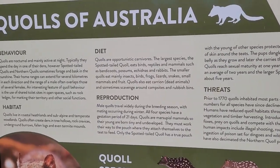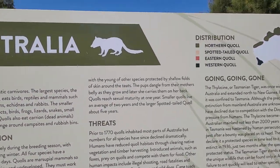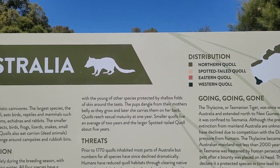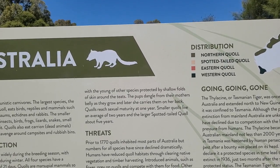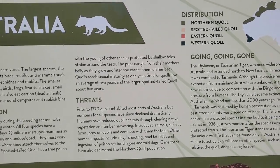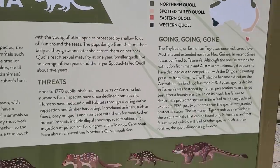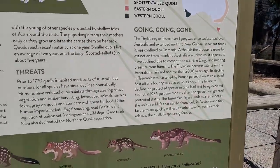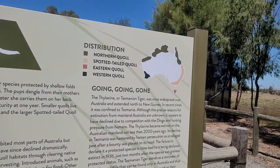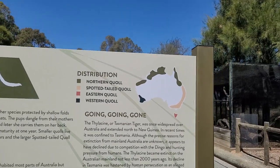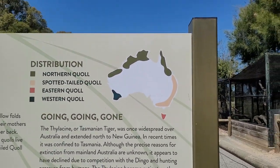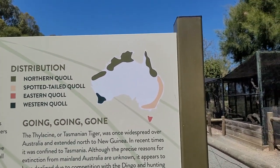Gestation period is 21 days, sexual maturity at one year, and they live for two years — except for the larger one which lives for five years. So not really a long-lived animal. Here we have the habitat distribution.